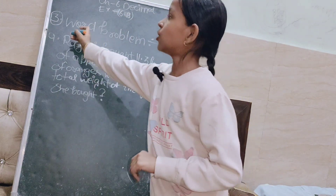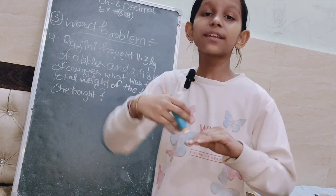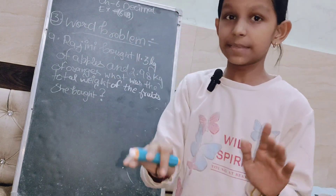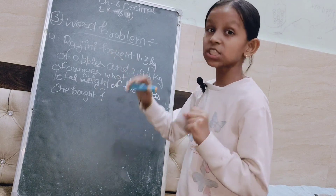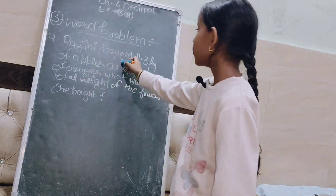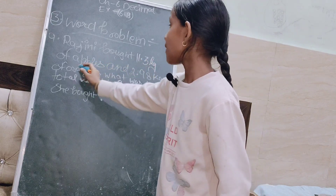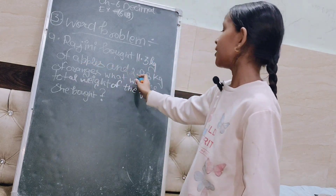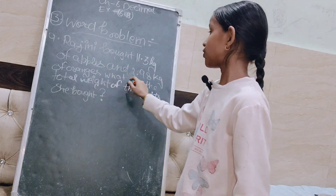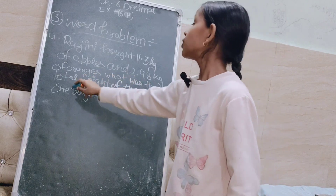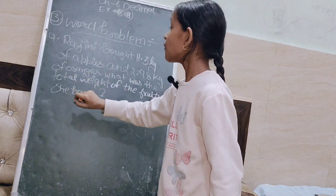So guys, this is very easy and we have a word problem. The word problem is very easy. We bought 11.3 kg of apples and 2.98 kg of oranges. What was the total weight of the fruit she bought?